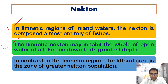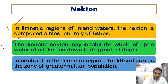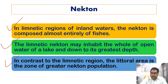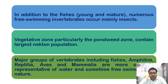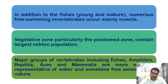In contrast to the limnetic region, the littoral area is the zone of greater nekton population. In addition to fishes — both young and mature — numerous free-swimming invertebrates occur, mainly as insects.